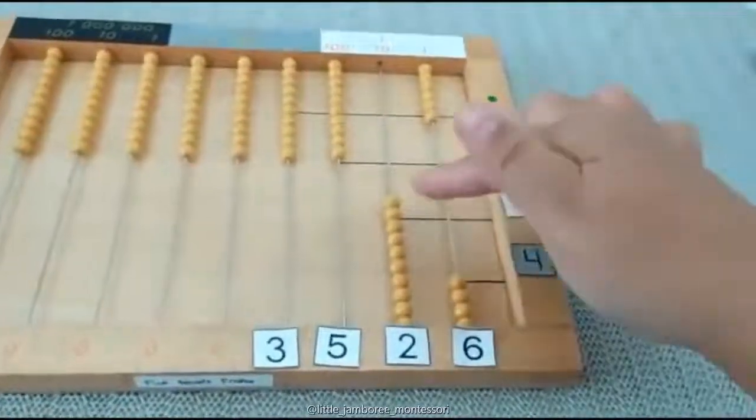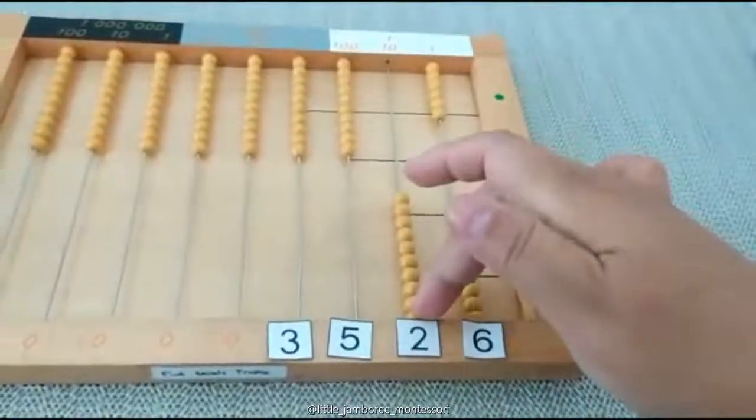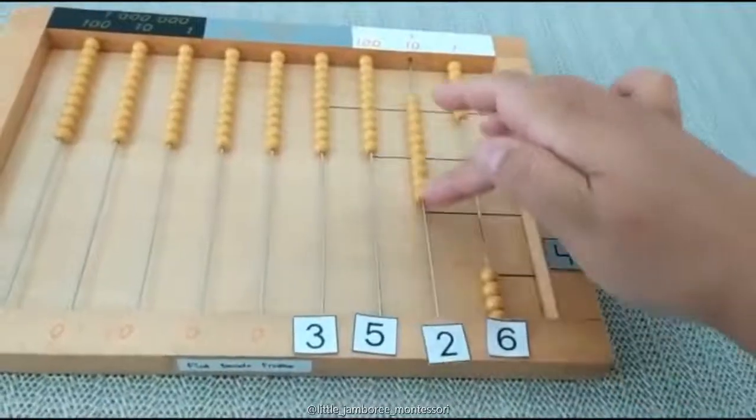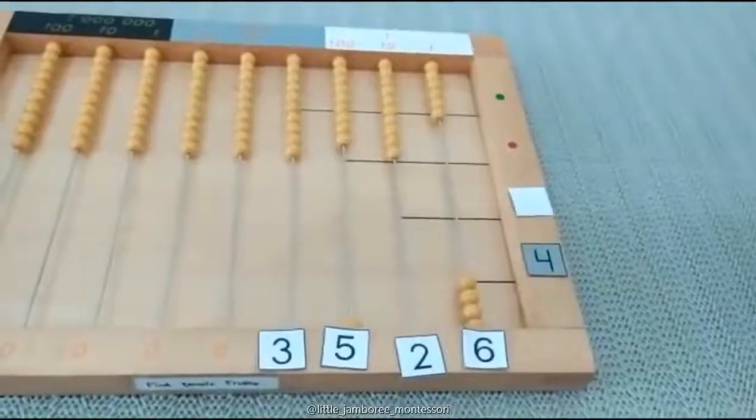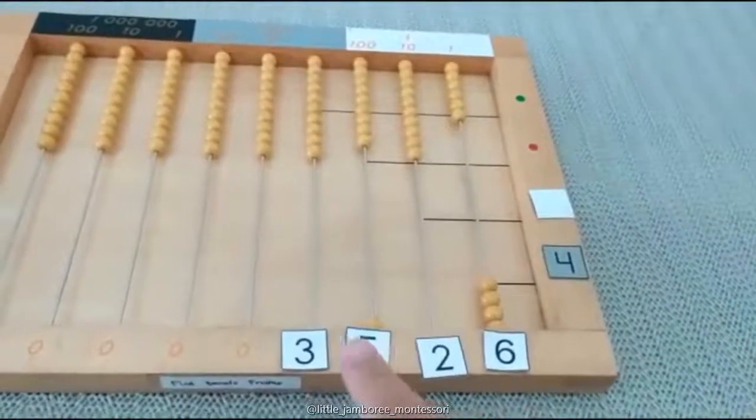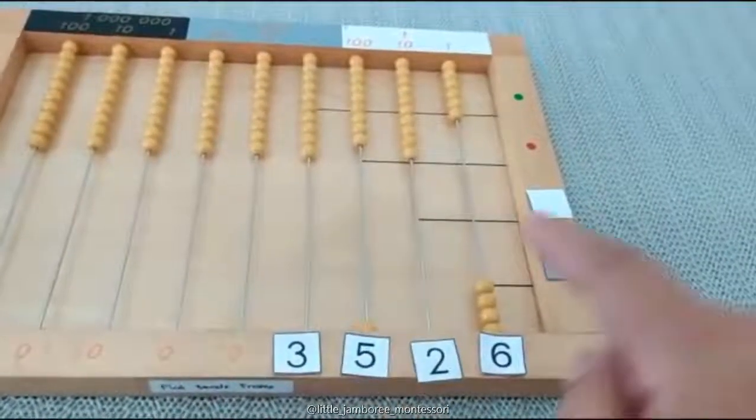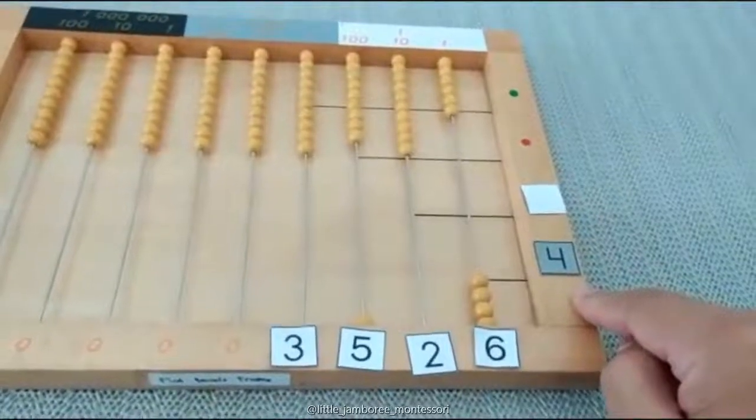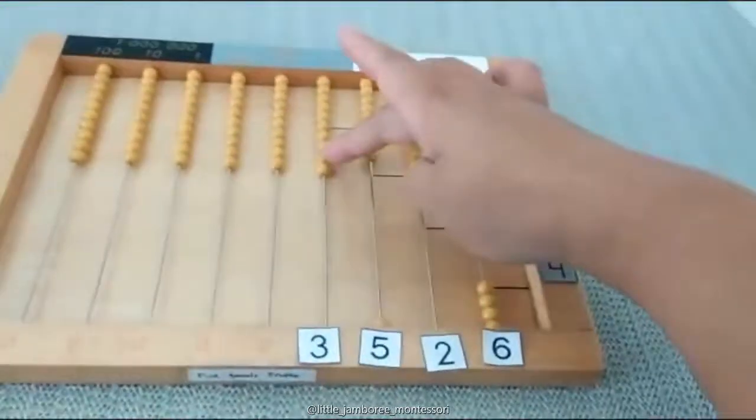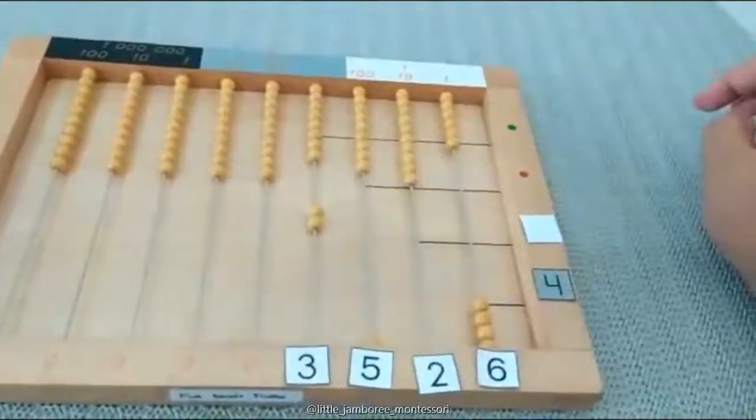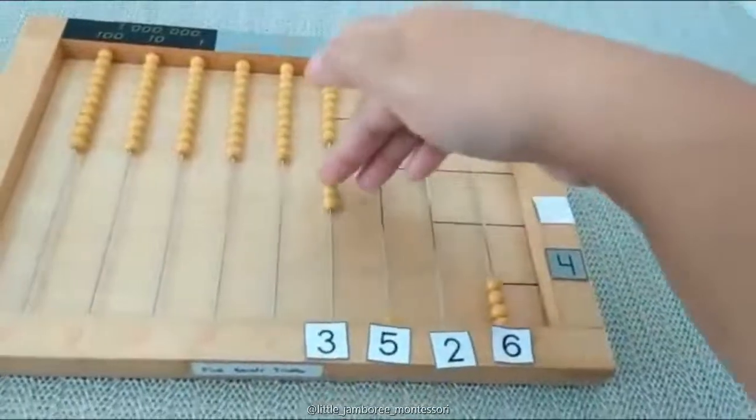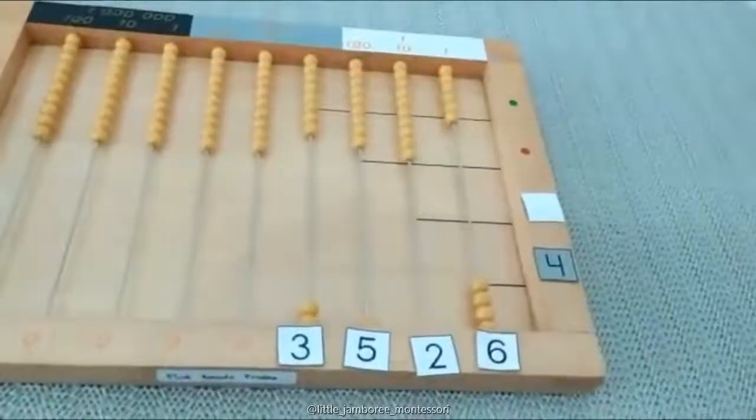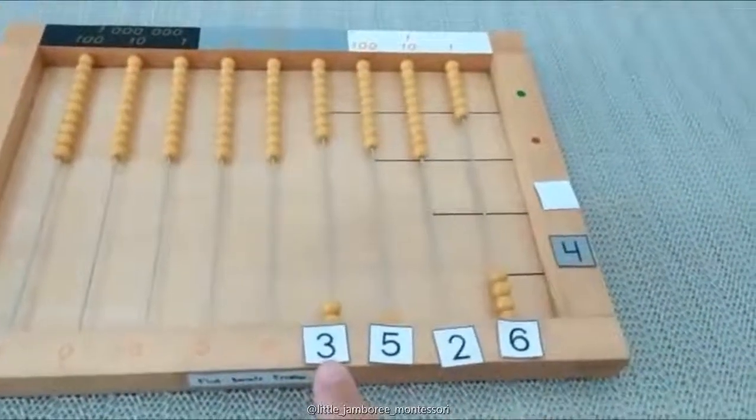Okay, eight tens - it's already reached 10, so I need to exchange with 100. Now I go to the 500 multiplied by four, which equals 20, so it's 2000.